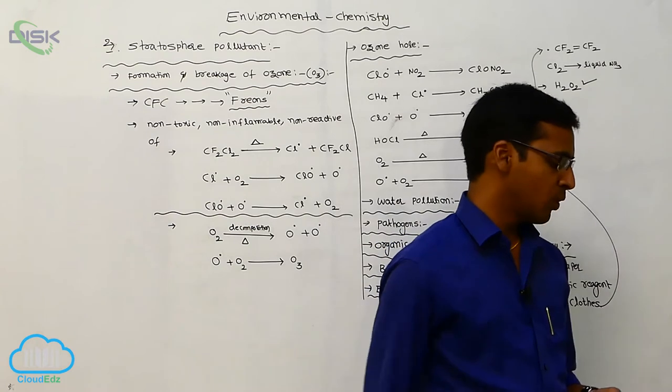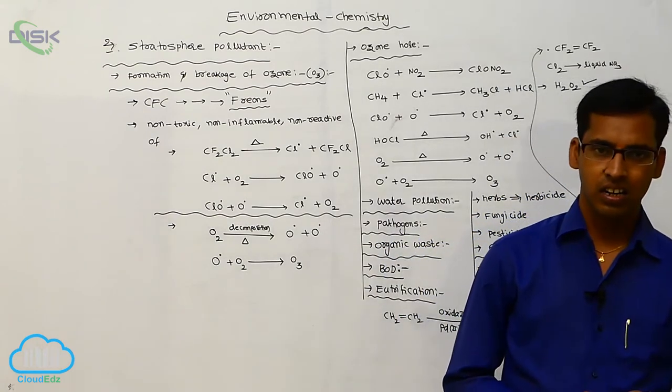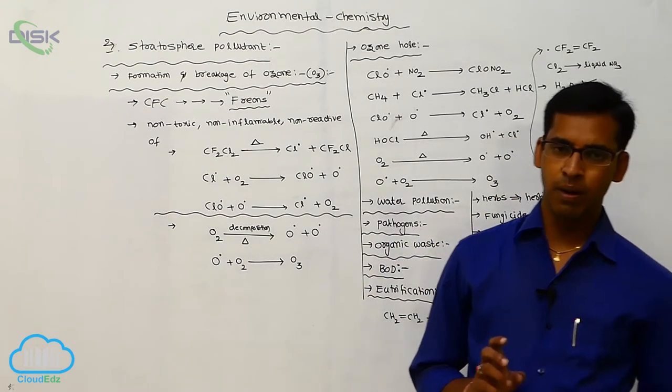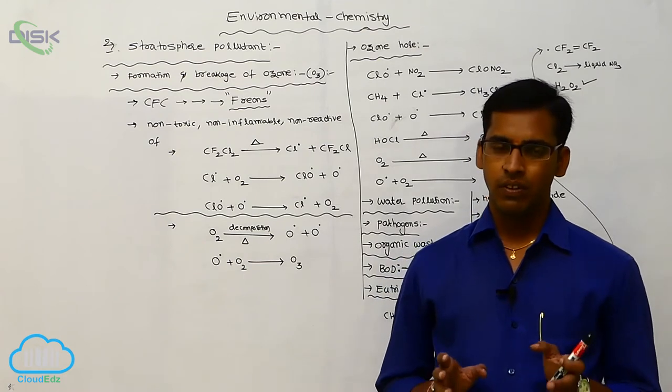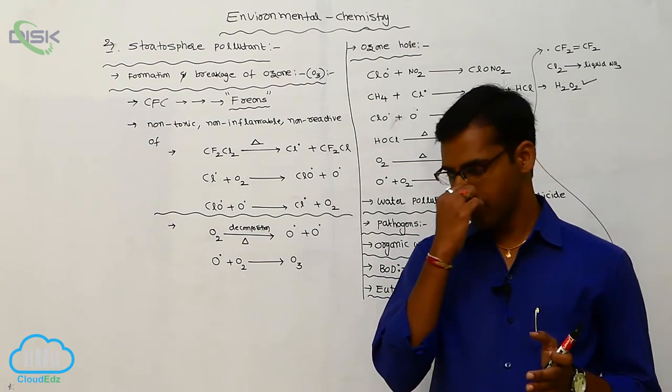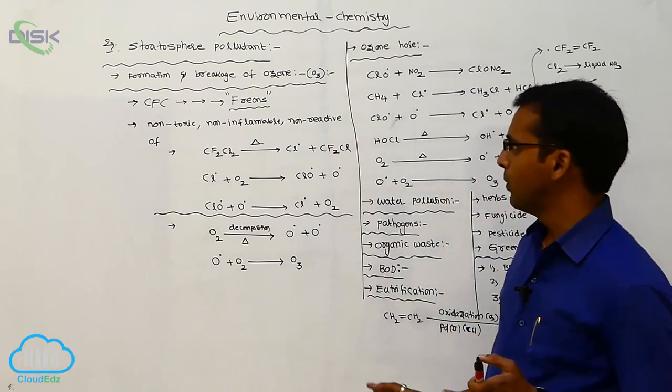In bleaching of cloth, the chlorofluorocarbons, CF2 double bond CF2, were used. But nowadays we use hydrogen peroxide.